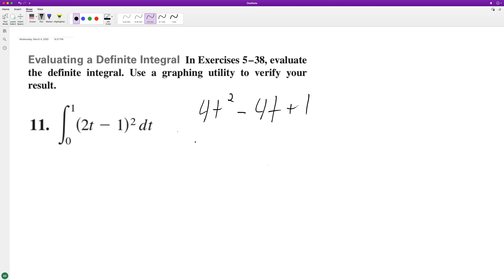So when we integrate this, we end up with 4t raised to the third over 3, minus 4t squared over 2, which just becomes 2t squared, plus t. All right, so we get when we run...